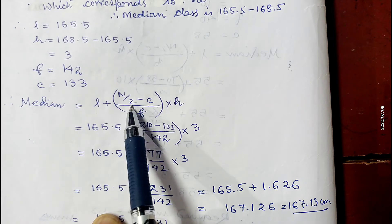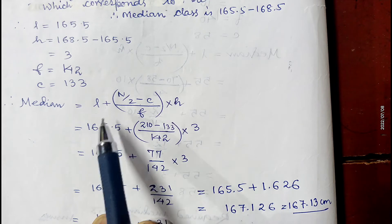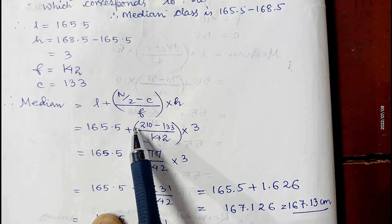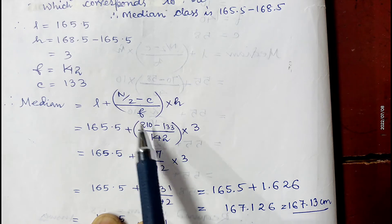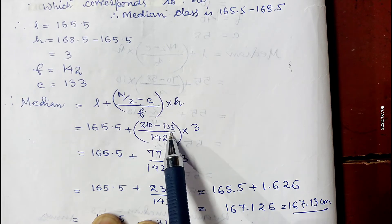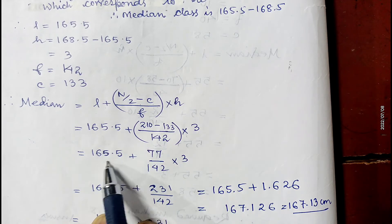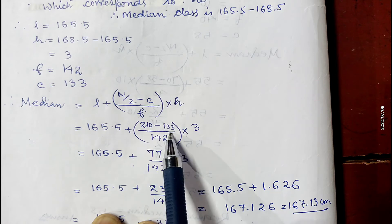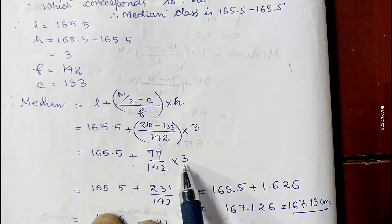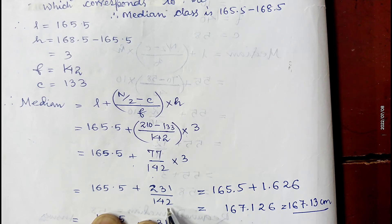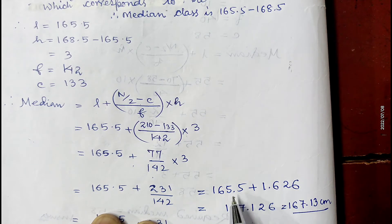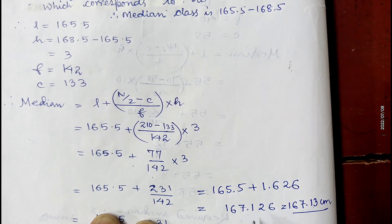Applying the median formula: Median = l + [(n/2 − c) / f] × h = 165.5 + [(210 − 133) / 142] × 3 = 165.5 + (77/142) × 3 = 165.5 + 231/142. Dividing 231 by 142 gives 1.626, so the median is approximately 165.5 + 1.626 = 167.126, which rounds to 167.13.